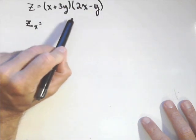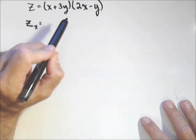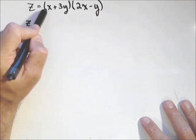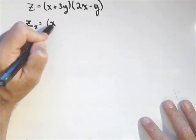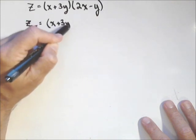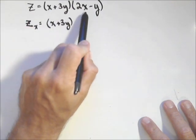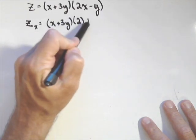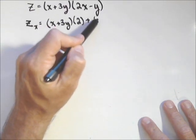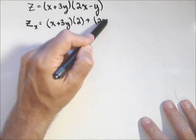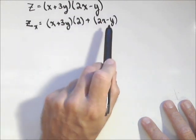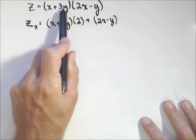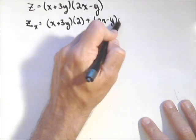One way I can do this one, I could multiply it together beforehand, or I can use product rule. All our old rules still apply. So I'm going to hold this one constant, so (x + 3y) times the derivative of this second part with respect to x, which is just 2. Plus, now I'm going to hold this part constant, (2x - y) times the derivative of this part with respect to x. This is a constant, so the derivative of that is just 1.